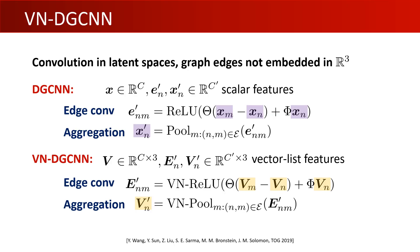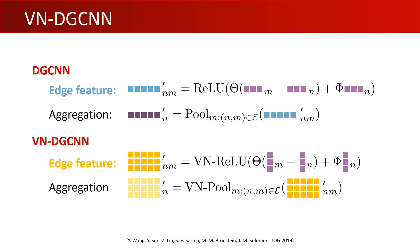DGCNN comprises convolutions, but the message passing is on dynamic graphs whose edges are not directly embedded in R^3. As shown here, our VN-DGCNN only requires a straightforward modification. Instead of stacking adjacent points horizontally into a six-dimensional vector, we stack them vertically into a 3 by 2 tensor.